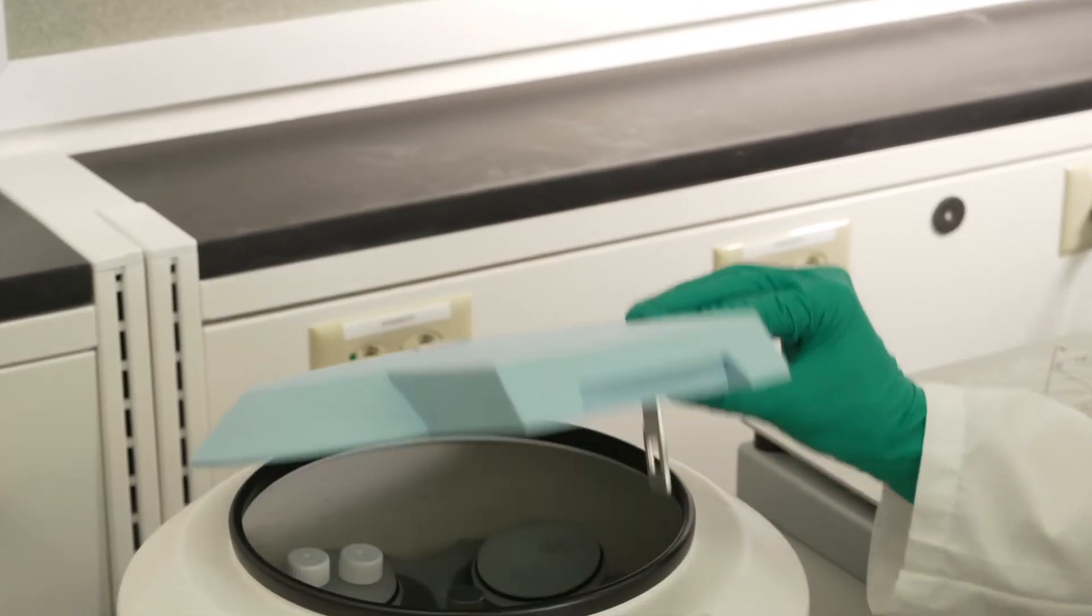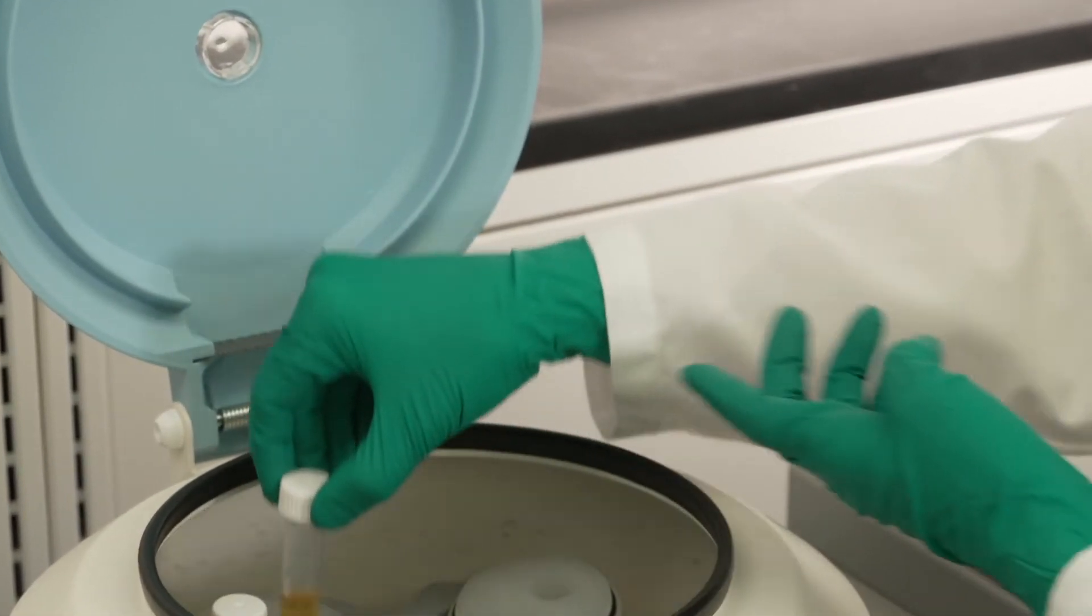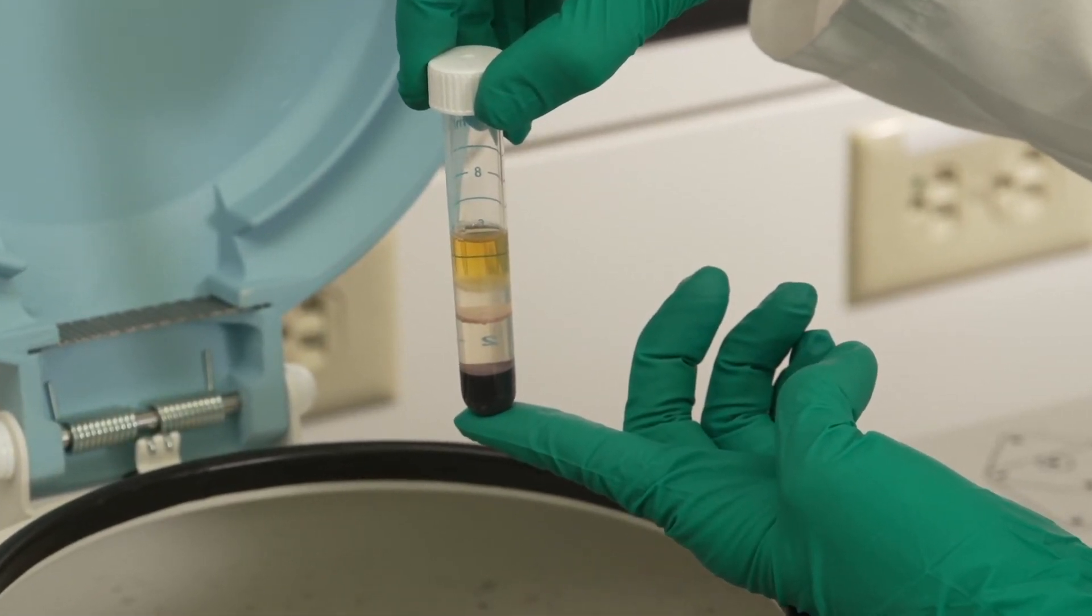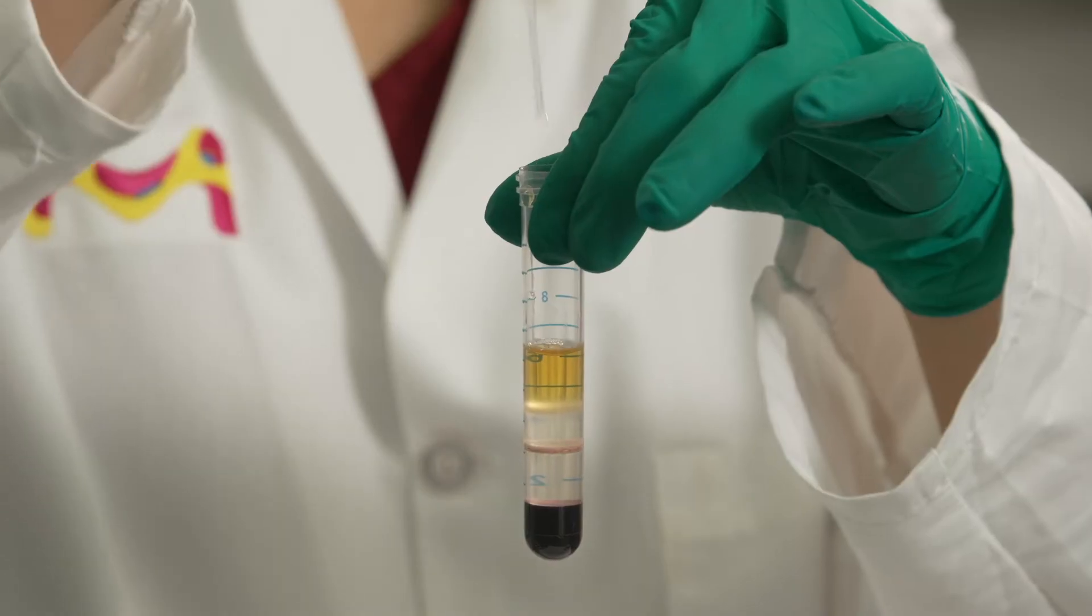This should result in erythrocytes and granulocytes pelleting to the bottom of the AccuSpin tube, and mononuclear cells banding between histo-opaque and the plasma layer.